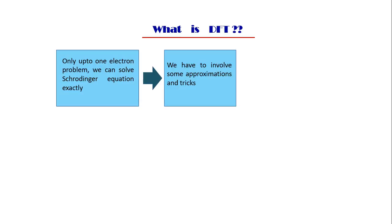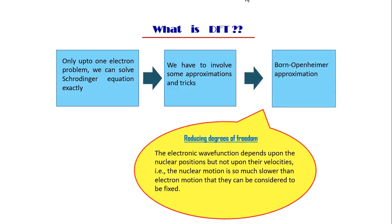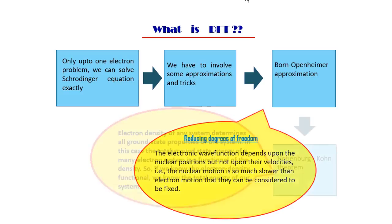Now at first comes the Born-Oppenheimer approximation. It says that the electronic wave function depends upon the nuclear position, but it does not depend upon their velocities. Actually the nucleus is so much heavy that it cannot move so fast and that's why it cannot affect the electronic wave function much. So you can take this approximation.